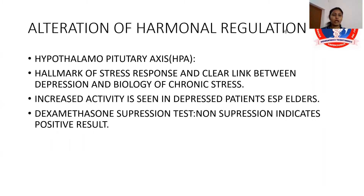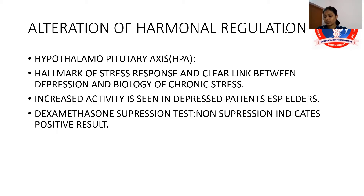Regarding alteration in hormonal regulation, the hypothalamic-pituitary axis is the hallmark of the stress response, and there is a clear link between depression and the biology of chronic stress. Increased HPA axis activity is seen in depressed patients. The dexamethasone suppression test shows a positive result indicating presence of depression, representing hypersecretion of cortisol due to hyperactivity of the hypothalamic-pituitary-adrenal axis. Approximately 50% of patients with major depression have abnormal results on this suppression test.